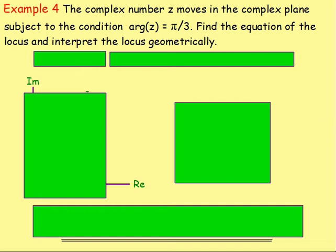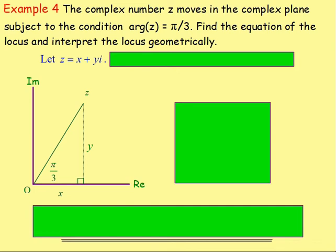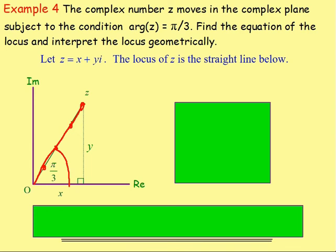Example four: the complex number z moves in the complex plane subject to the condition arg(z) = π/3. Find the equation of the locus and interpret the locus geometrically. Let z = x + yi. On the Argand diagram, because z = x + yi, we come along x and up y. If we think about all those points joined together — in order to keep that angle of π/3 — we always end up with a straight line.